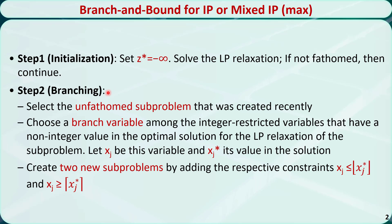Step 2 is called branching. Select the unfathomed subproblem that was created recently. Then choose a branch variable that is supposed to be an integer but is not right now in the optimal solution to the linear programming relaxation of the subproblem. Let xj be this variable and xj* its value in the solution. Create two new subproblems by adding the respective constraints: xj ≤ floor(xj*) and xj ≥ ceiling(xj*). The floor function means the largest integer less than or equal to xj*, and the ceiling function means the smallest integer greater than or equal to xj*.